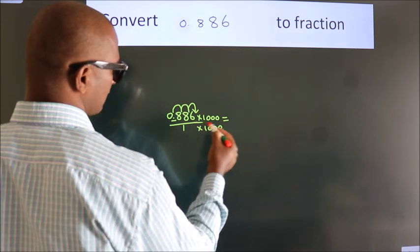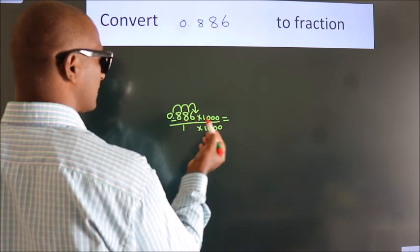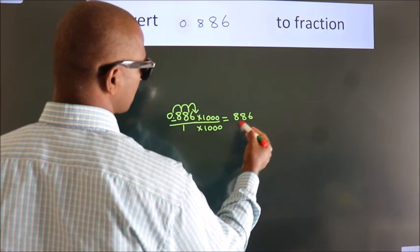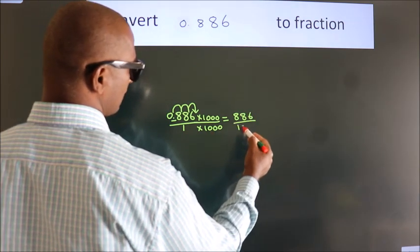Next, 0.886 into 1000, 886. 1 into 1000, 1000.